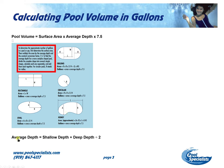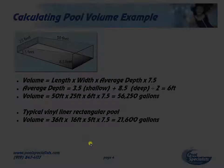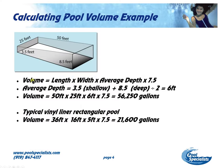Once we have the surface area, next we're going to need to figure out what our average depth is. We measure our depth in the shallow section of the pool, then we add that to the depth in our deep end, and we divide that by two — that gives us our average depth. To calculate the volume: length times width is our surface area, times the average depth, times 7.5, which is a constant that converts this into gallons.